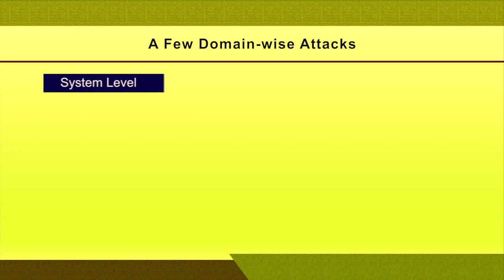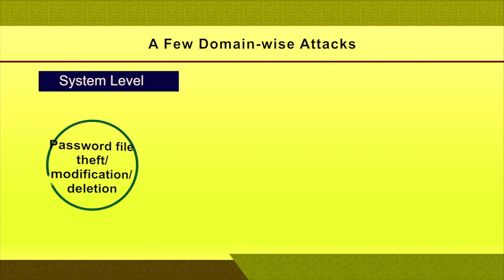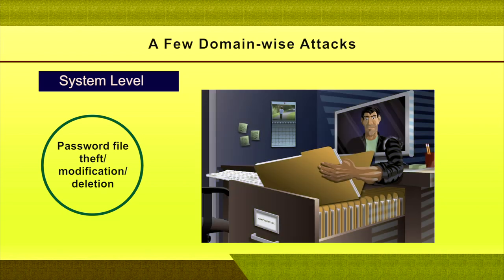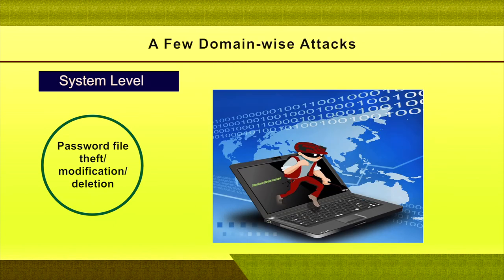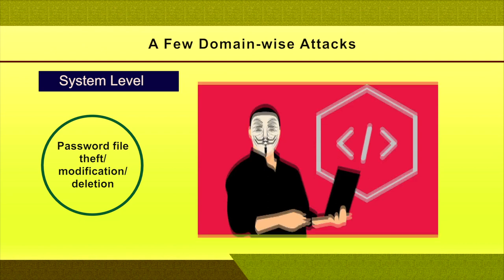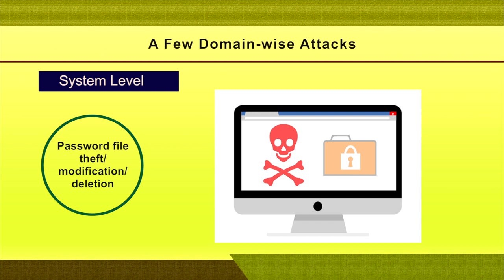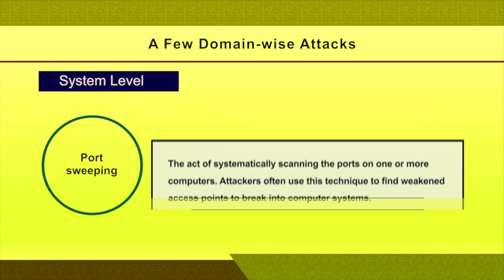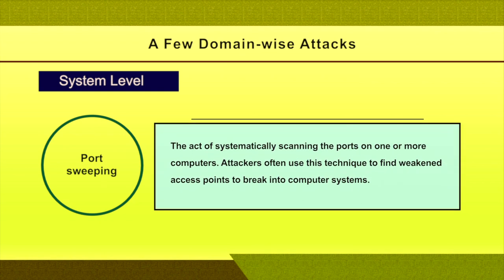At system level, one attack is password file theft, modification, or deletion. A server's password file contains all genuine users' data — if that data is captured, modified, or deleted, it creates a major chaotic situation. Hackers target the password file to steal, modify, or delete entries or the entire file. Port sweeping is also an attack at system level — ports should be regulated by opening or closing them depending on the services and applications required.